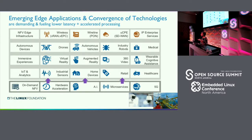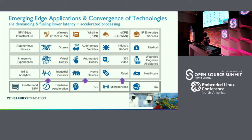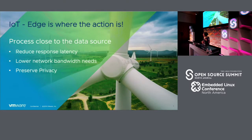We heard a talk this morning at the keynote about how data centers are competing with the airline industry for their carbon footprint. Some of this will be relieved by not transmitting so much data, processing it sooner, and not having to store everything. The edge will depend on the application, the compute it has, and the hardware acceleration it has. That's why the edge is important — we want to do stuff close to where the data is, reducing response latency, network bandwidth, and also preserving privacy.